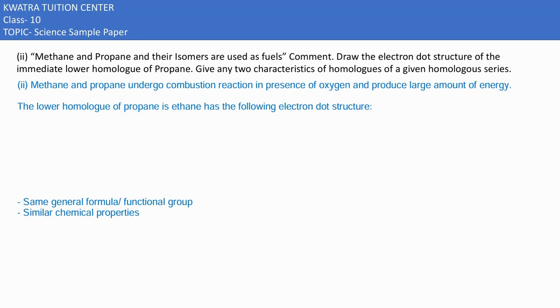Second situation: they have given methane and propane and their isomers are used as fuels. They are saying draw the electron dot structure of the immediate lower homologue of propane. Propane is smaller than propane, we have ethane. So let's make a dot structure of ethane. First let's make a formula for ethane.